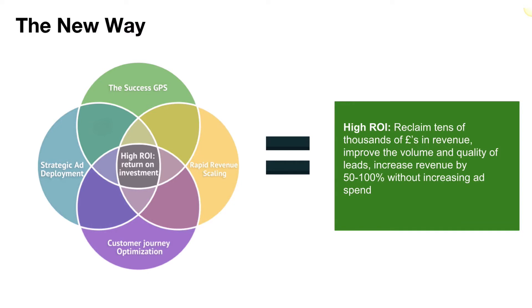These four principles — what I call the Success GPS, Strategic Ad Deployment, Customer Journey Optimization, and Rapid Revenue Scaling — allow you to reclaim tens of thousands of pounds in revenue, improve the quality and volume of leads, and increase your revenue by 50 to 100%, all without increasing your ad spend.